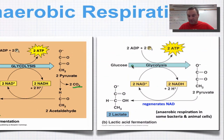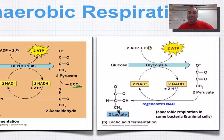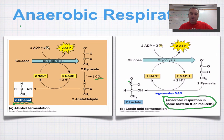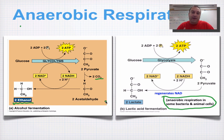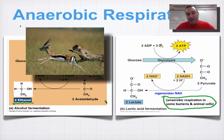In lactic acid fermentation, you go through glycolysis, make ATP, and regenerate NAD+. You take your pyruvate and convert it into lactate, or lactic acid. This occurs in some bacteria and in animal cells like your muscle cells. Why don't muscle cells use alcoholic fermentation instead? Every time you exercised, your body would be making alcohol and potentially getting drunk.